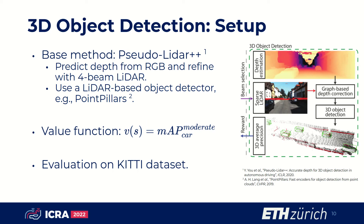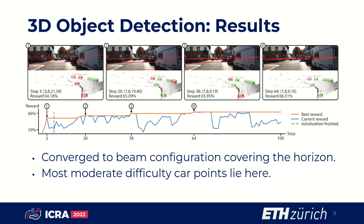Afterward, the depth values are converted to a pseudo point cloud, which can be used with any existing LiDAR-based method. In this work, we use the popular PointPillars. Here, we show the evolution of the beam search. As one can see, the selected beams converge to a configuration that covers the horizon, as most points of interest lie here.